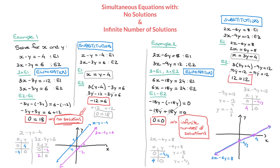That's what the result looks like using substitution. The conclusion is the same: as soon as we reach a result like 0 equals 0, or 12 equals 12, or negative 3 equals negative 3, the pair of simultaneous equations has an infinite number of solutions. Graphically, we're dealing with coincident lines — one of the two lines lies exactly on top of the other.